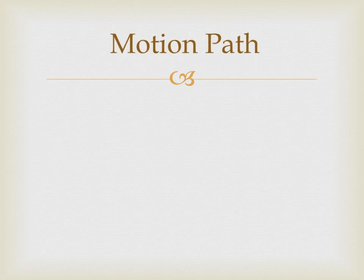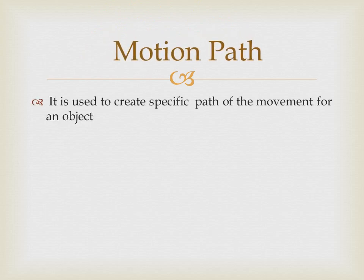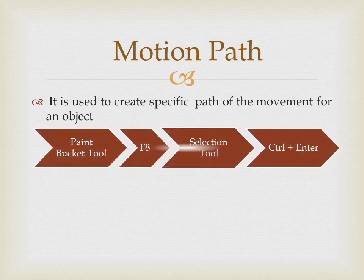The next topic is motion path. The use of motion path in animation provides a feature to create a specific path of movement. To create it: use the rectangle tool or oval tool to design the vehicle, fill color on its various parts using the paint bucket tool, then press F8 — the Convert to Symbol dialog box appears. Enter the symbol name and select the graphic option. Double-click the layer and rename it. Insert a new layer in the timeline and rename it, then click Edit and Cut to cut the path. Finally, press Ctrl+Enter to test the movie.